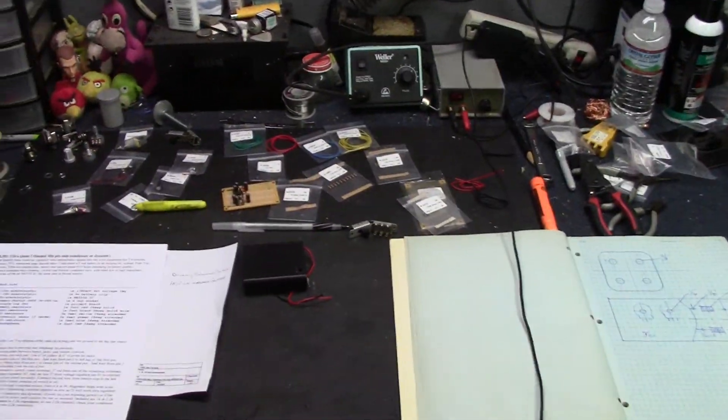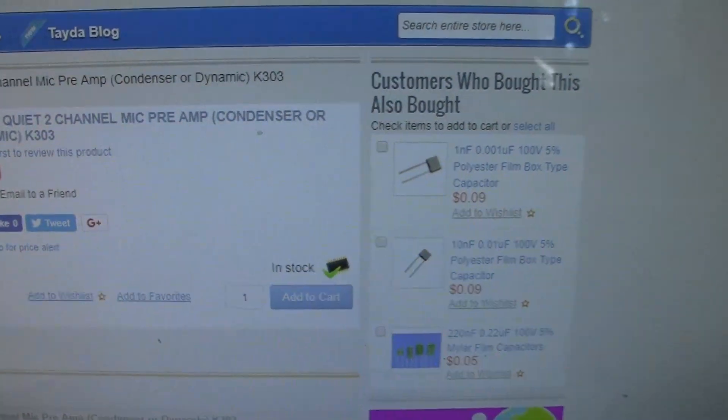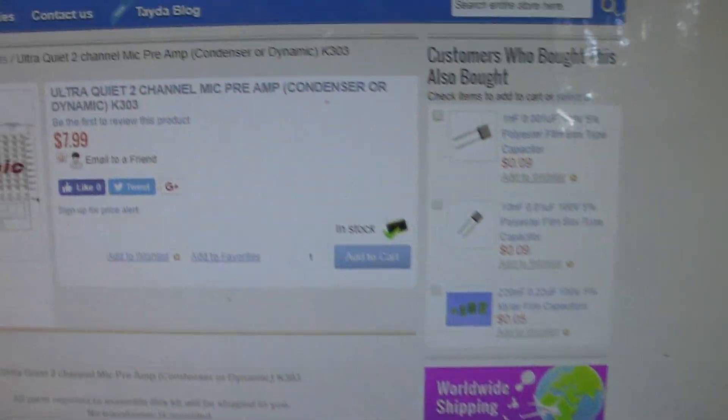Take a look at what I got happening here. Tata Electronics sells these little kits. One of them was a K303. It is an ultra quiet two channel mic preamp, condenser or dynamic. And what are they selling for these days? $7.99. Pretty cool.